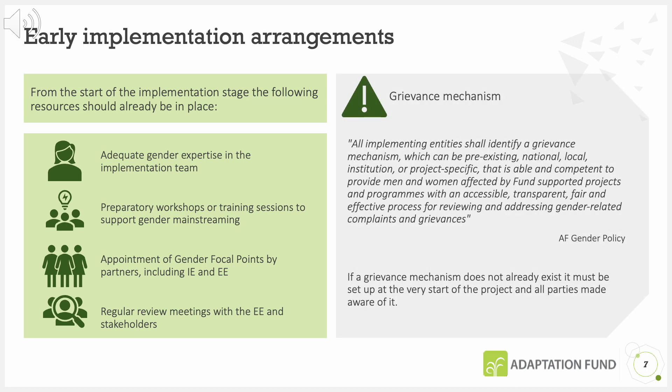Additionally, all implementing entities must identify and have in place a grievance mechanism, which can be pre-existing, national, local, institution or project specific, that is able and competent to provide men and women affected by fund-supported projects and programmes with an accessible, transparent, fair and effective process for reviewing and addressing gender-related complaints and grievances. If a grievance mechanism does not already exist, it must be set up at the very start of the project and all parties made aware of it.